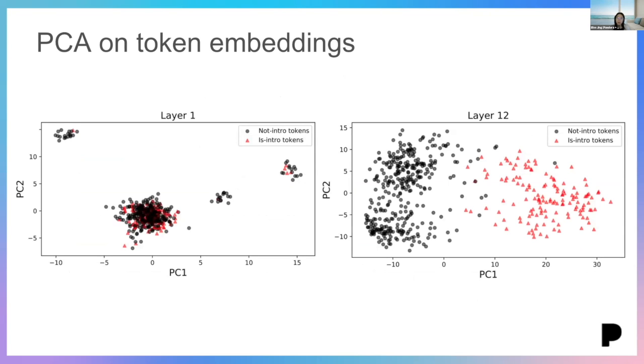And finally, we looked at the token embeddings learned by the models to better understand how they're learning to do this prediction. So we performed the principal component analysis on the token embeddings from the output in the first layer of the BERT model, as well as the final layer, that's the 12th layer. And at the first layer, we found several clusters, mainly clustering based on semantic meanings. For example, there was a cluster of personal pronouns, and there is another cluster of verbs such as do and does. And here, the intro tokens and the not intro tokens are not separated. However, at the 12th layer, we found two pretty distinct clusters of the is intro and the not intro tokens. This tells us that the model has learned this task-specific information at this layer.